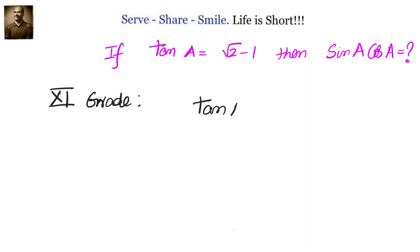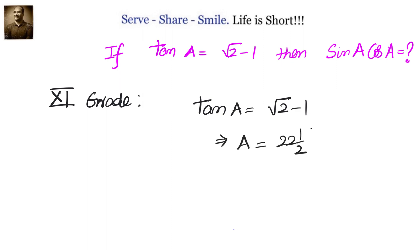We have been given tan A equals 2 square root of 2 minus 1. That clearly tells us that A equals 22 and a half degrees, or half of 45 degrees — 22.5 degrees.